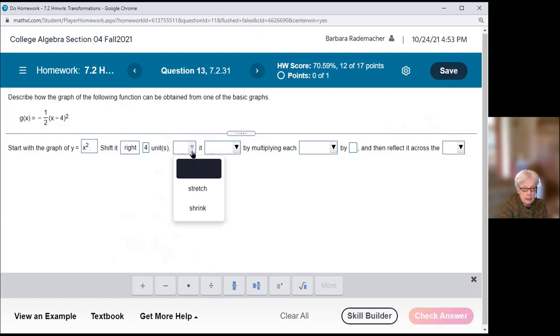And then do something to it. Either stretch it or shrink it. This is going to be a vertical stretch. If this one half were inside the parentheses in front of x, it would be a horizontal stretch. But it's not. It's a proper fraction outside the argument. So this is a vertical shrink.